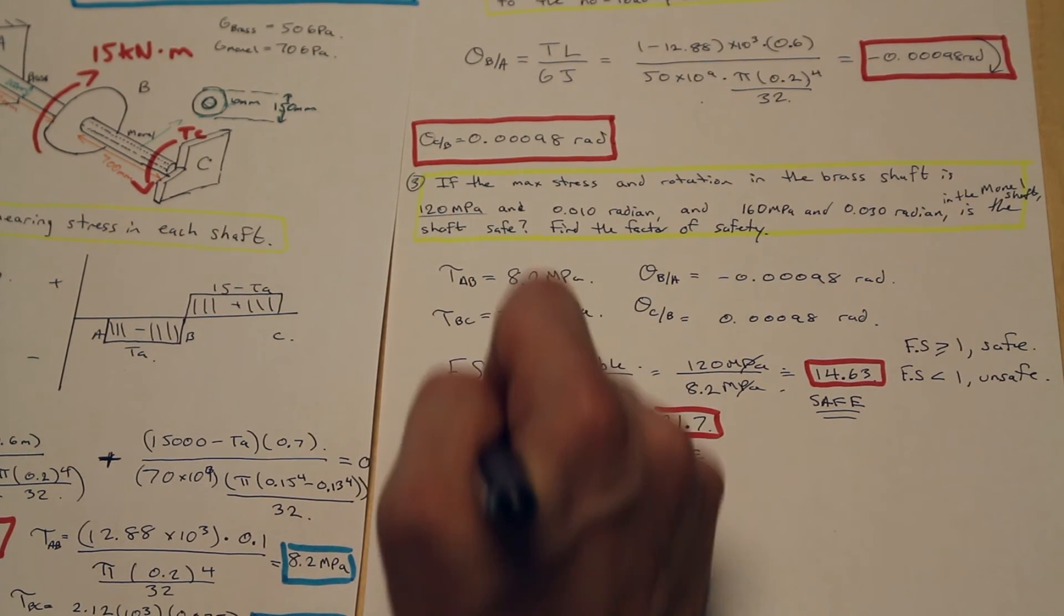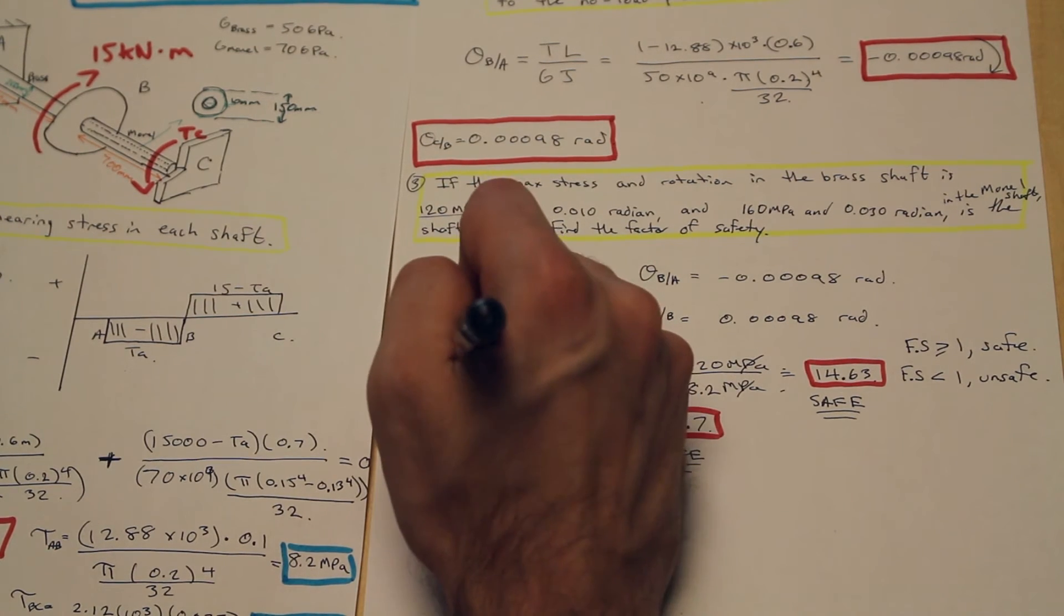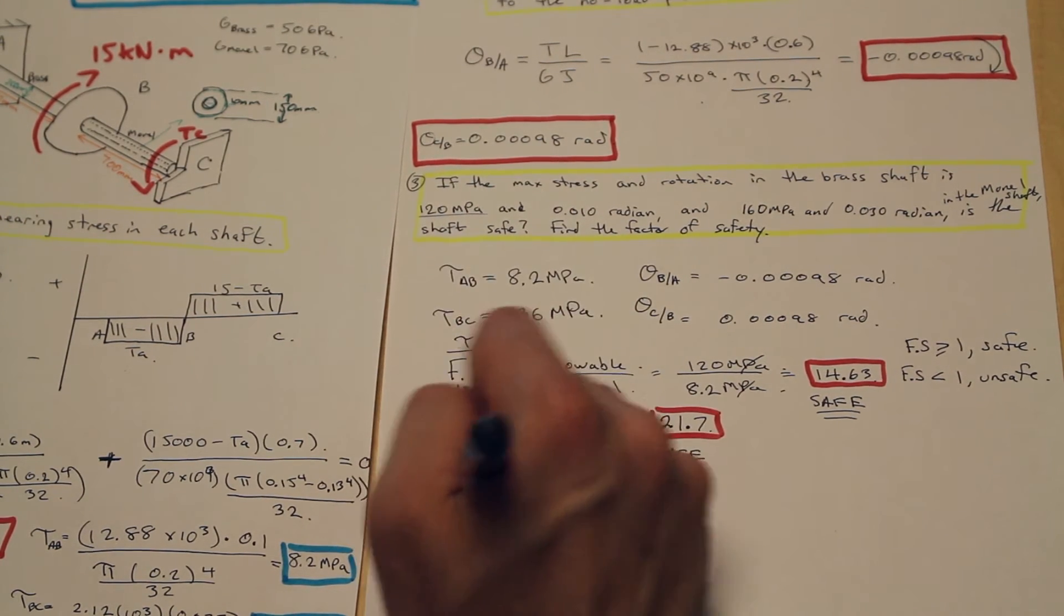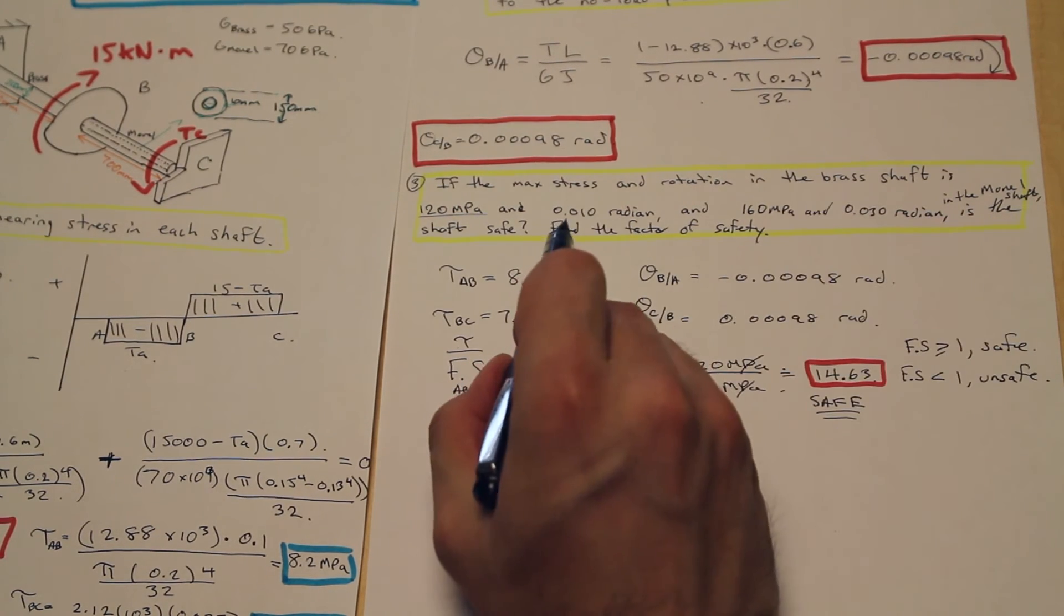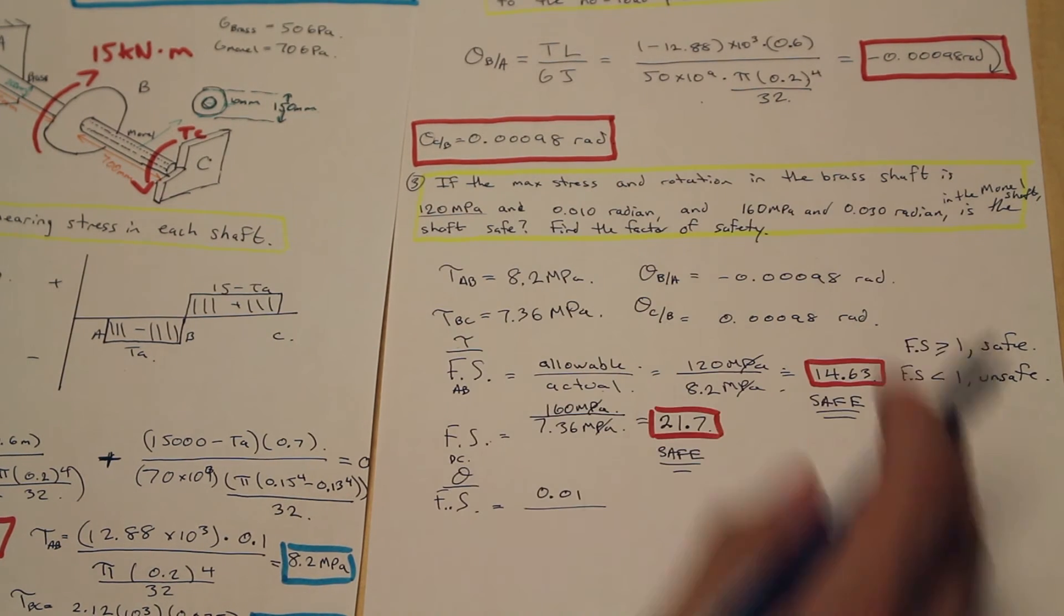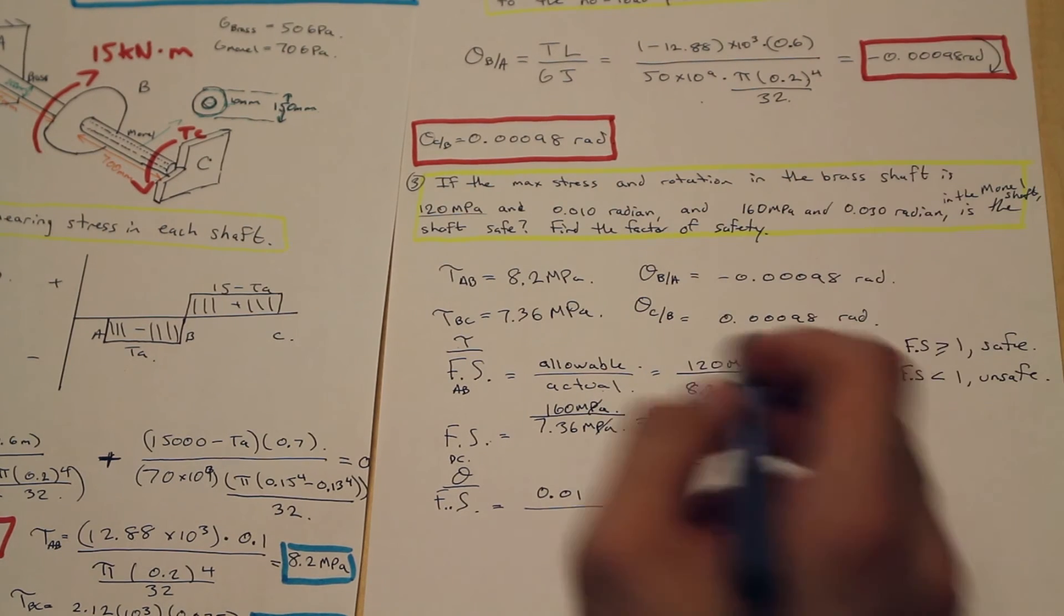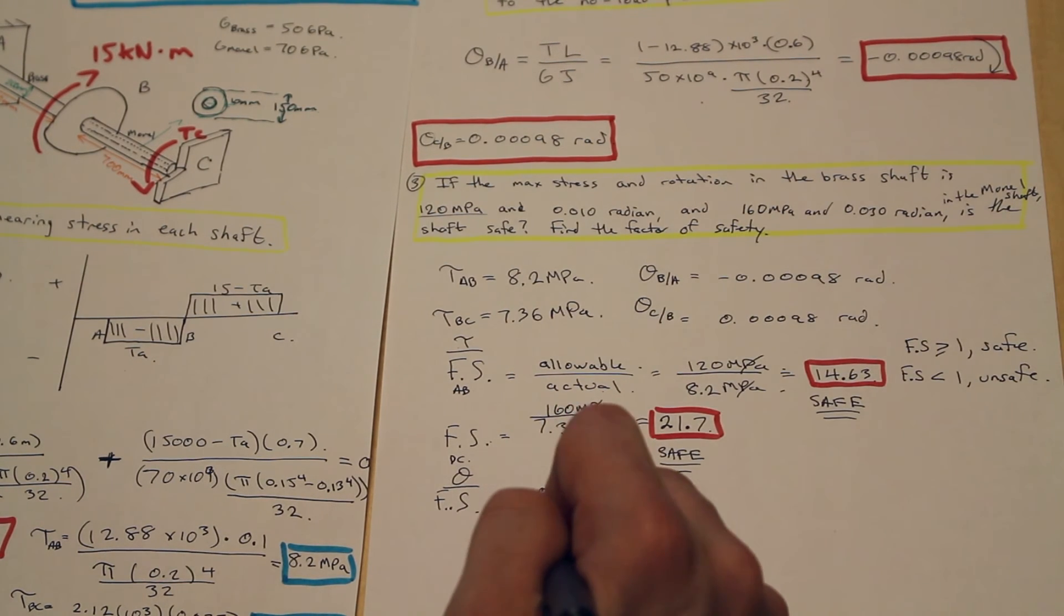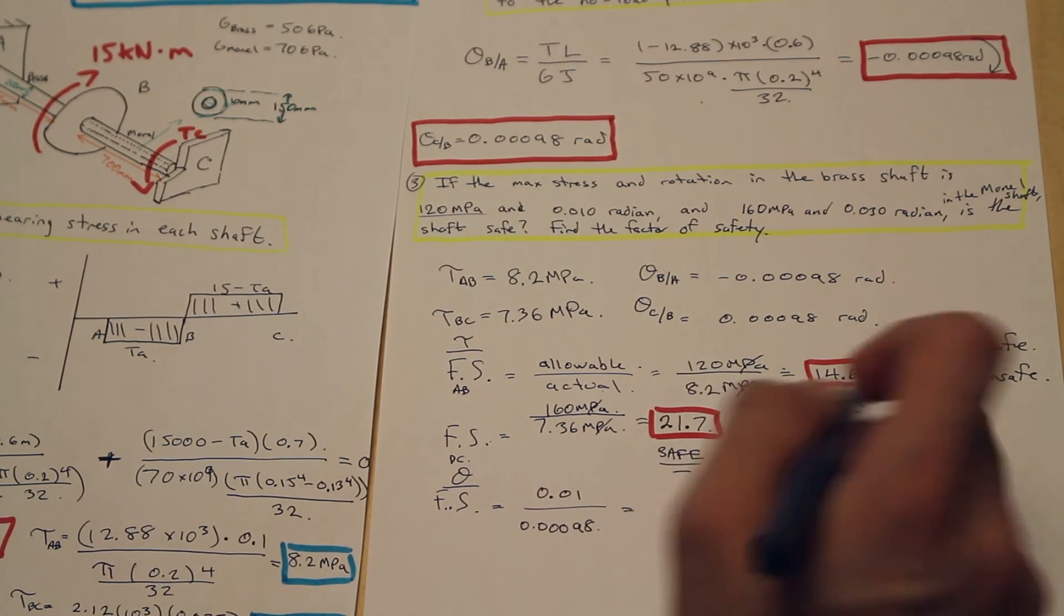Let's double check the factor of safety. We'll put AB here, BC. Factor of safety, and this is for our tau, and this is for our theta. Now let's look at our theta. What is the allowable radian, 0.01 for the angle of twist for section AB, and what did we calculate? We found it to be 0.10. Don't worry about the negative sign. We're concerned with absolute value here.